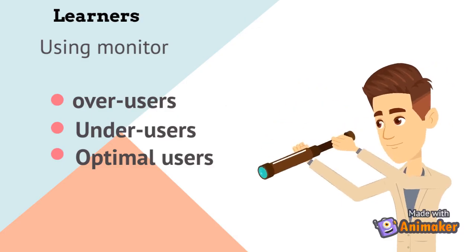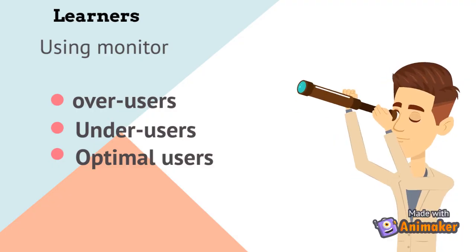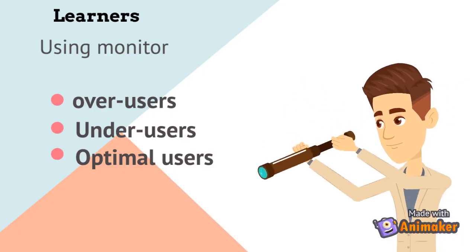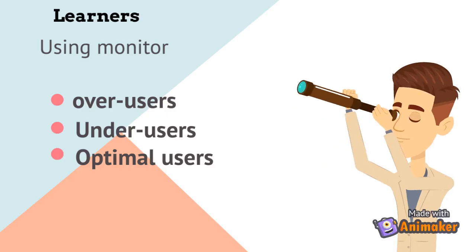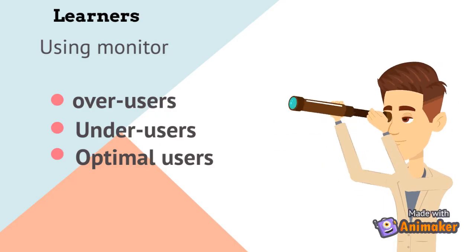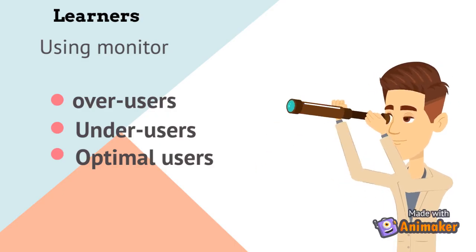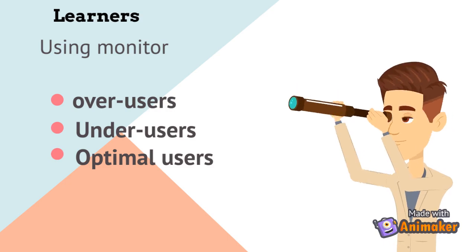Usually, extroverts are under users, while introverts and perfectionists are over-users. Lack of self-confidence is frequently related to the over-use of the monitor.